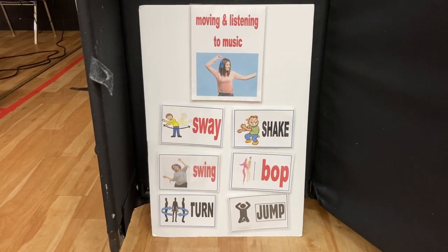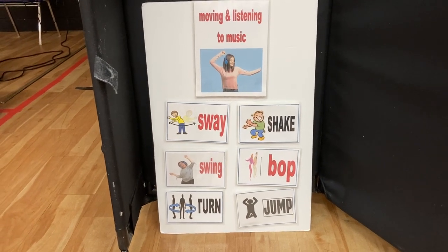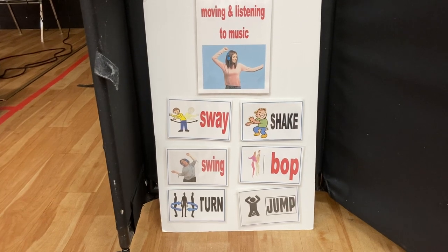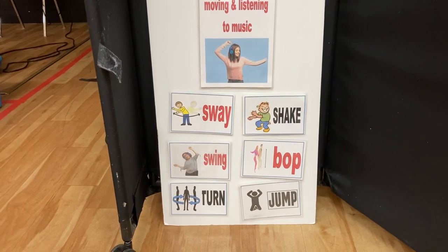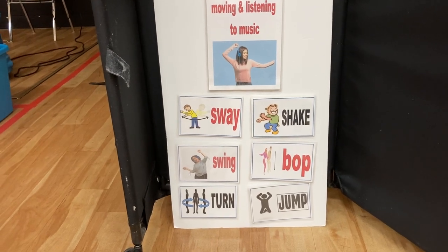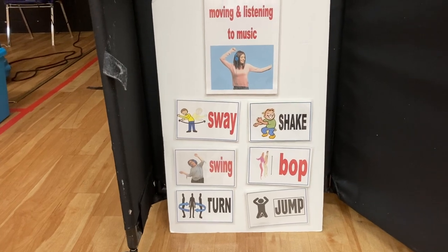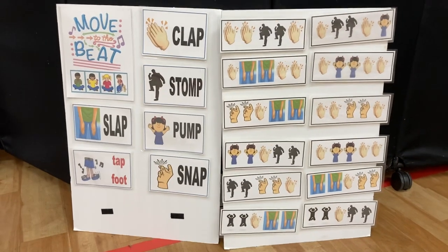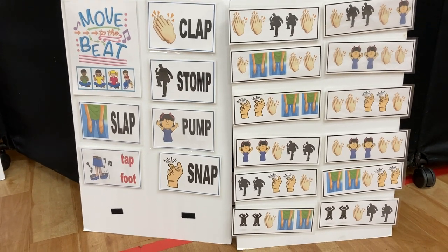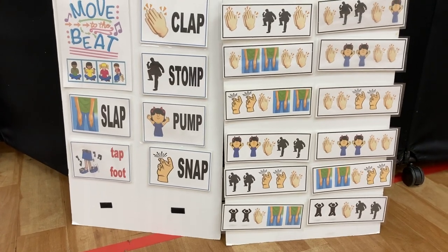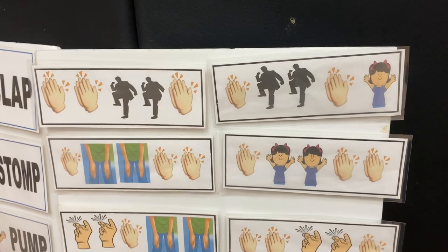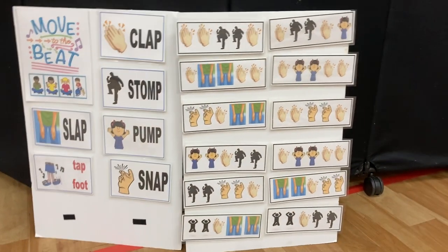Visuals are great when teaching a lesson. Here we have moving and listening to music — students get an idea of what the visual is, we learn the movement for it, and then use it throughout our lessons. For 'Move to the Beat,' we have clapping, stomping, pumping, snapping, slapping, and tapping our foot — all body percussions. Then we use visuals to show the sequencing in our song.